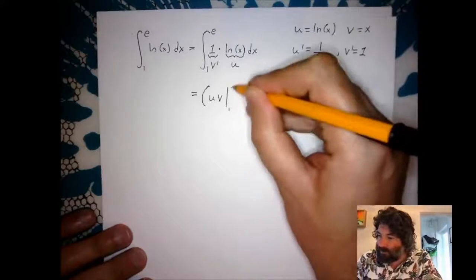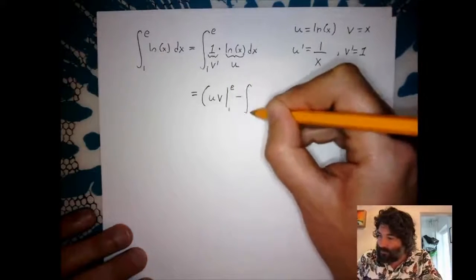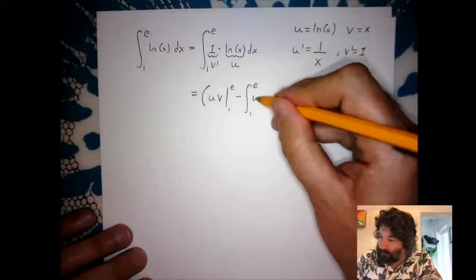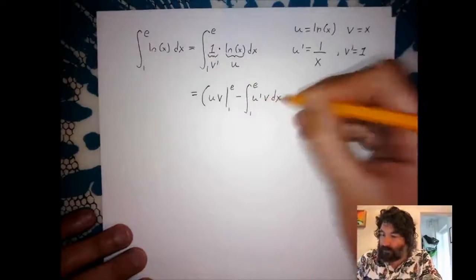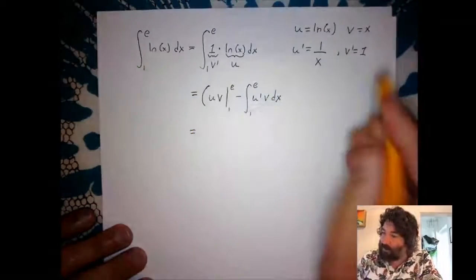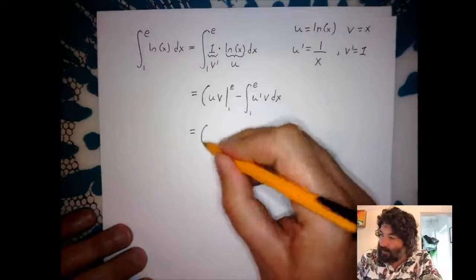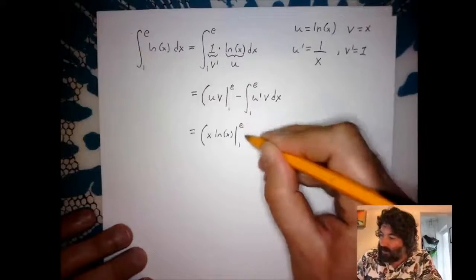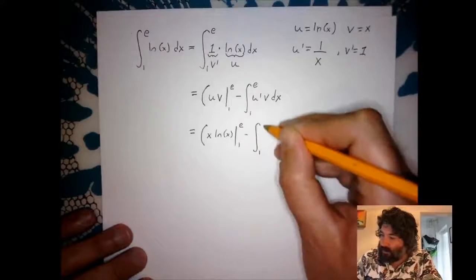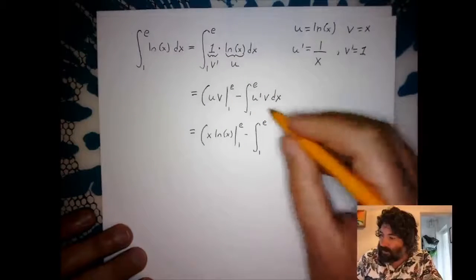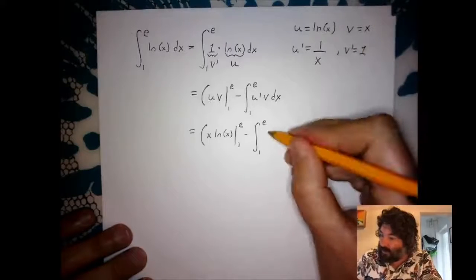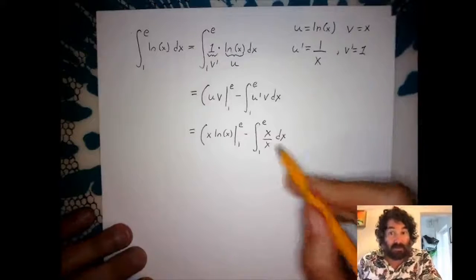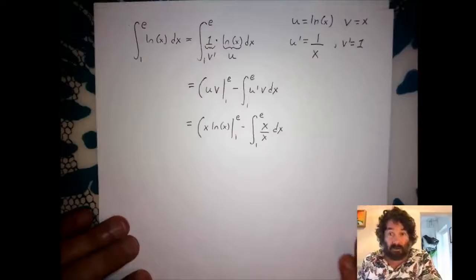Setting up the table: u = ln x, u′ = 1/x (the derivative of ln x), v′ = 1, and v = x (since the derivative of x is 1). Using the integration by parts formula, u·v is x·ln x, evaluated from 1 to e, minus the integral from 1 to e of u′·v = (1/x)·x dx.